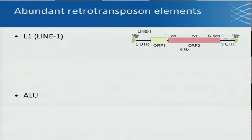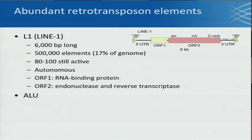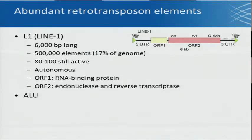Just a brief background on two of the most abundant retrotransposon elements, because we don't really hear about them much in cancer research. They are LINE-1, L1, and ALU. LINE-1s are 6,000 KB long, they compose 17% of the genome, and about 100 of them are still highly active. They're autonomous — that is, they have two open reading frames which encode for the reverse transcriptase and endonuclease needed to reverse transcribe and insert into the genome.